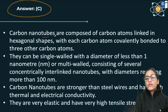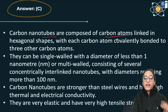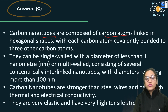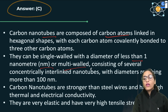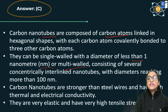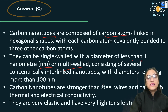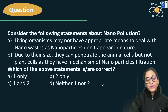Carbon nanotubes are made from carbon atoms arranged in a hexagonal shape, with each carbon atom covalently bonded to three other carbon atoms. They can be single-walled with a diameter of less than 1 nanometer, or multi-walled. They are quite strong compared to steel wire, have good thermal and electrical conductivity, are elastic, and have very high tensile strength.